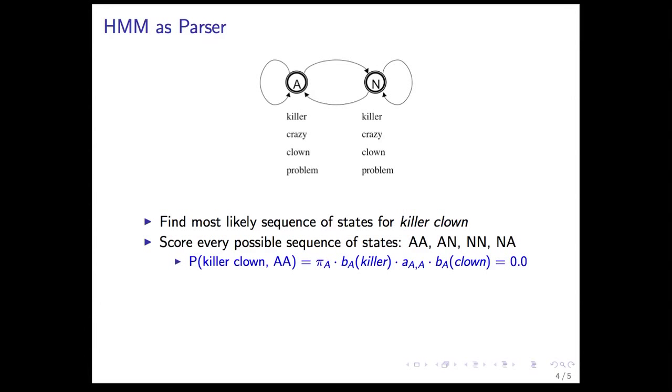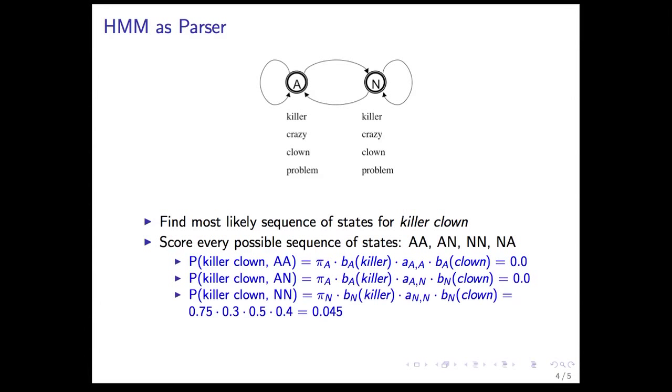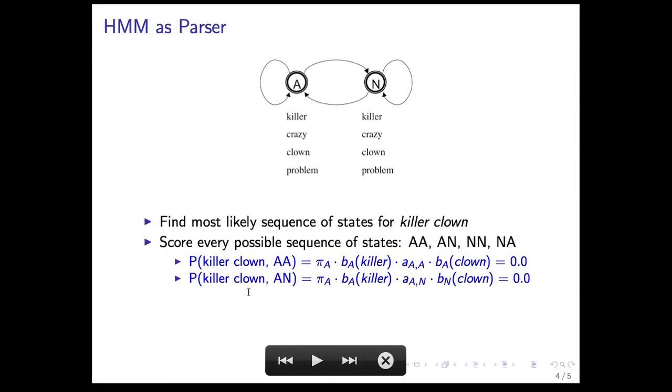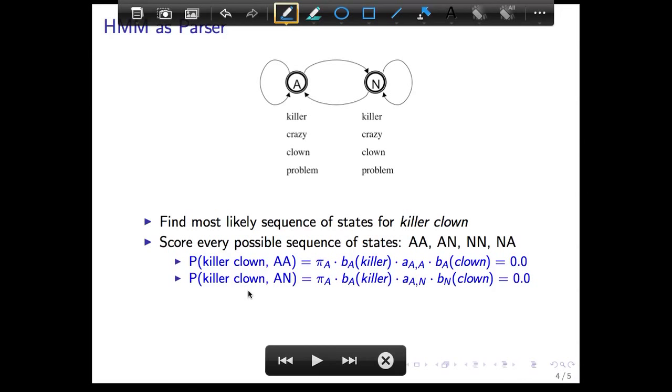And then we just compute the probability by looking at the table from the previous slide. So we just assign for each input, so for this input sequence, you assign A, N. That means you start at A, you generate killer as an adjective, you take a transition to an N, and then you generate clown as a noun.